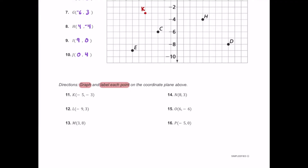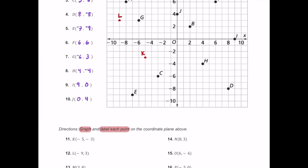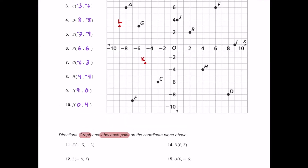Moving on to N, which is eight comma positive three. Start at the origin, go eight units to the right, and then positive three is three units up. So we plot the point right over here and label it N.